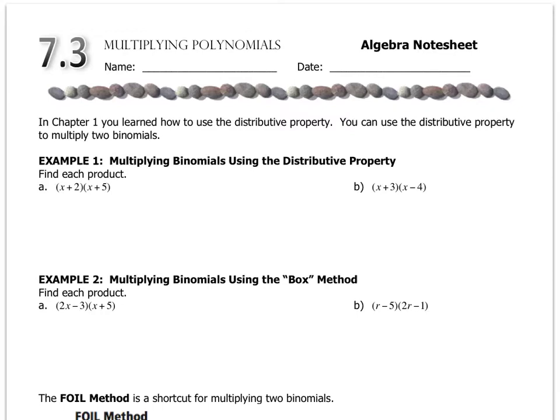So the first technique is using the distributive property. Remember, the distributive property is when you take something outside of parentheses and multiply it by everything inside. The first thing I'm going to do when I multiply using the distributive property is take the x and multiply it by x. Then take the x and multiply it by 5. But there's more than just x in this first parentheses. I also have to use the 2 somehow. So I'm going to take the 2 and multiply it by x, and then take the 2 and multiply it by 5.